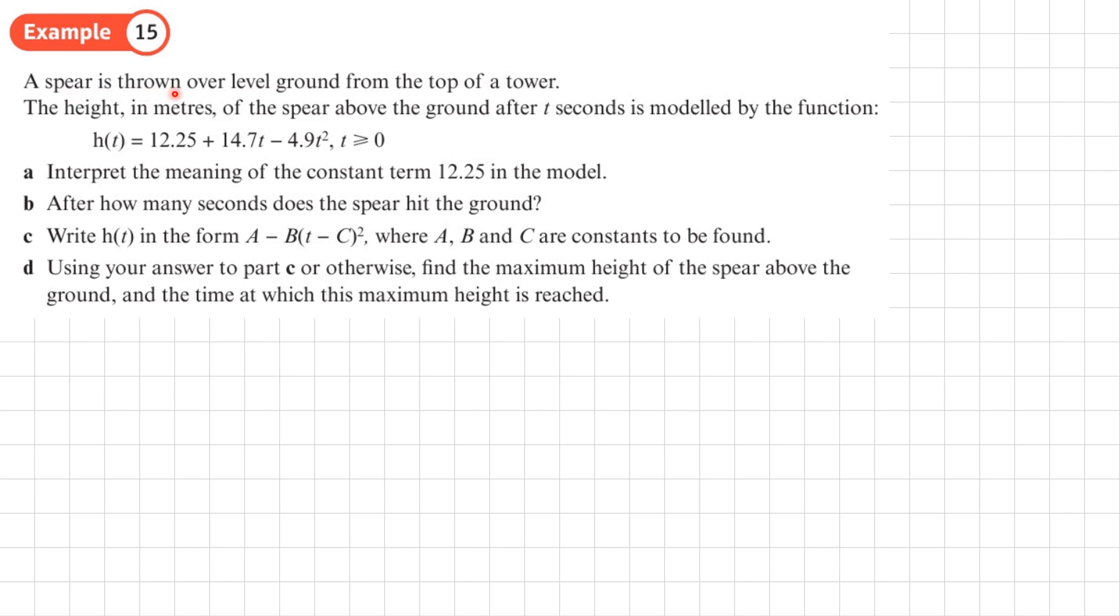Example 15. A spear is thrown over level ground from the top of a tower. The height in metres of the spear above the ground after t seconds is modeled by the function h(t) = 12.25 + 14.7t - 4.9t², where t is greater than or equal to zero. So this is my diagram of what's going on. Here's the tower, somebody's standing at the top of the tower, they throw a spear. I imagine the path of this spear is going to look something like this, gradually going down and hitting the ground at some point.